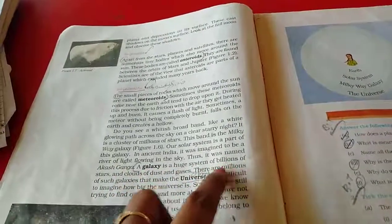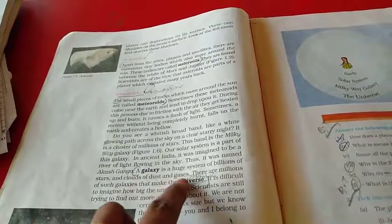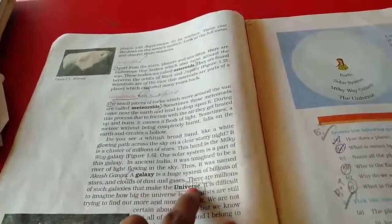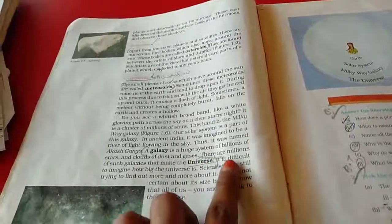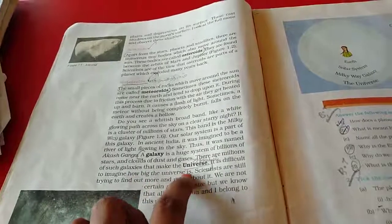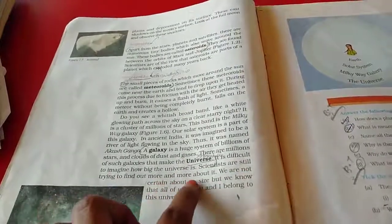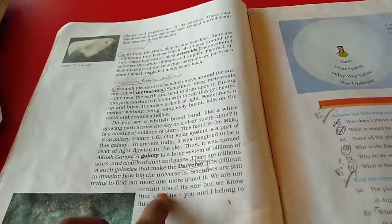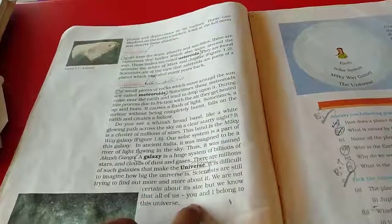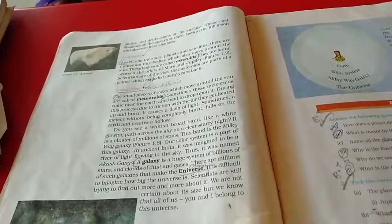A galaxy is a huge system of billions of stars and clouds and dust and gases. There are millions of such galaxies that make the universe. Universe means Andam. It is difficult to imagine how big the universe is. Scientists are still trying to find out more and more about it. We are not certain about its size. But we know that all of us, you and I belong to in this universe.